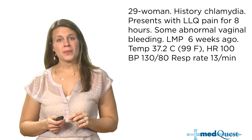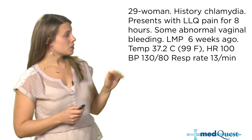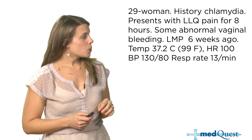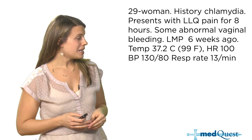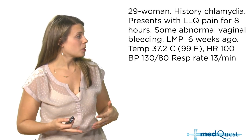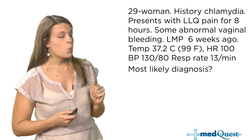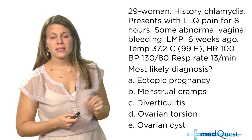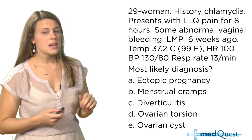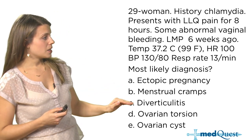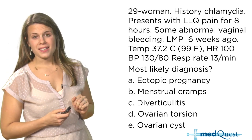We're going to start right away with a question. You have a 29-year-old woman. She has a history of chlamydia, some left lower quadrant pain for eight hours, a little bit of abnormal vaginal bleeding, and her last menstrual period was six weeks ago. Her vitals are listed here. What is the most likely diagnosis? Your answer choices are: ectopic pregnancy, menstrual cramps, diverticulitis, ovarian torsion, and ovarian cyst. Which do you think it is?